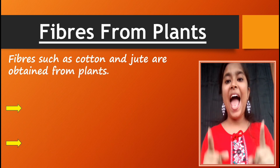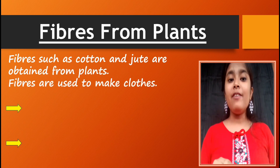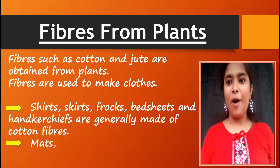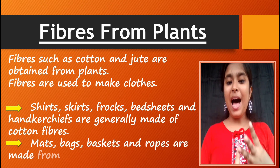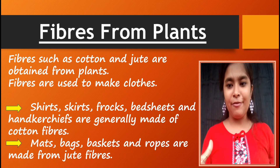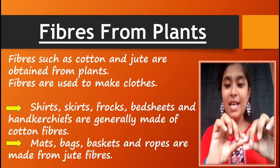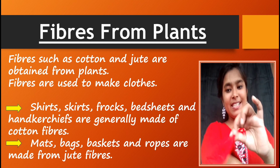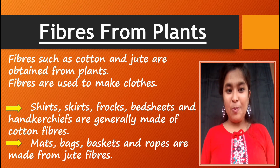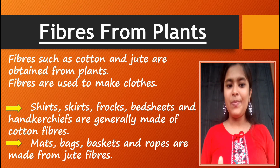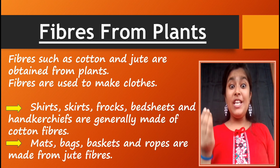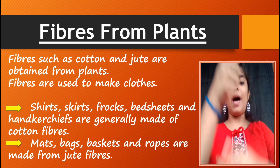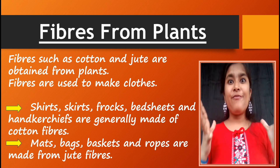Fibers such as cotton and jute are obtained from plants, and fibers are used to make clothes. Clothes like shirts, skirts, frocks, bedsheets and handkerchiefs are made from cotton fiber. The rough fiber, that is jute fiber, is used to make mats on which we sit, bags which we carry, baskets for carrying fruits, and ropes by which we climb up.